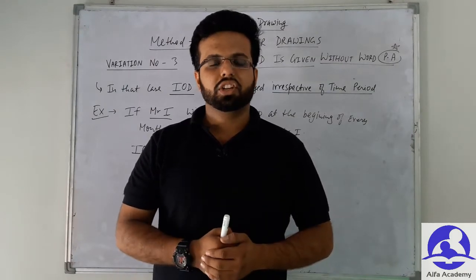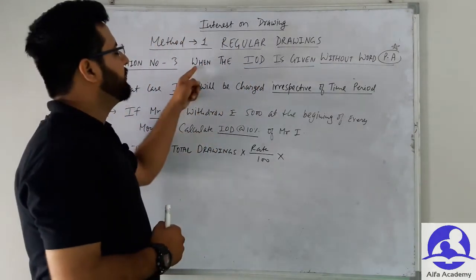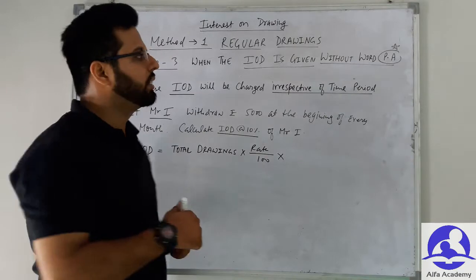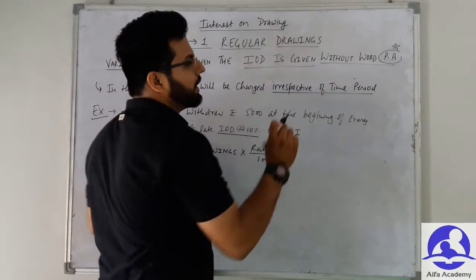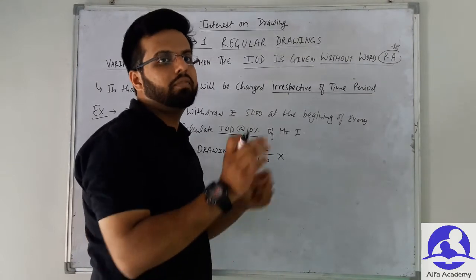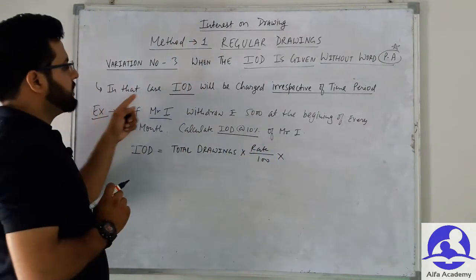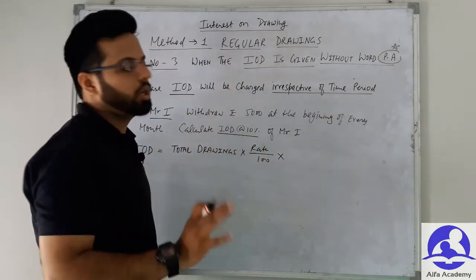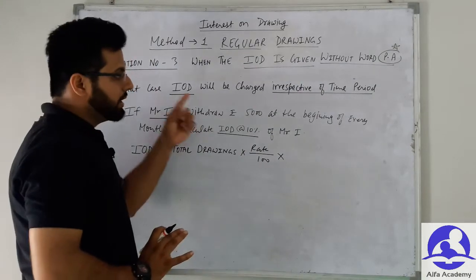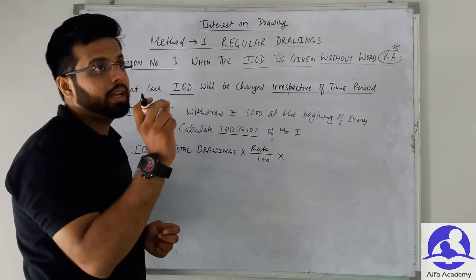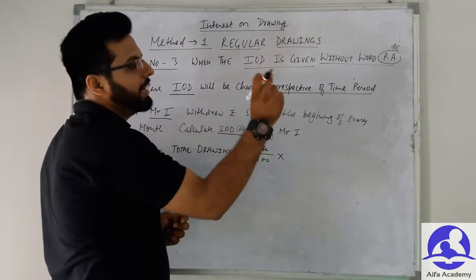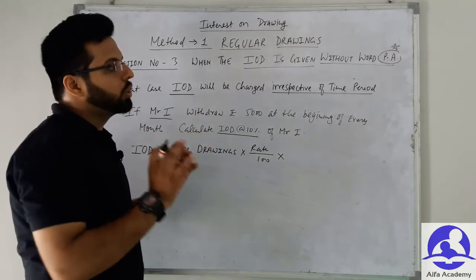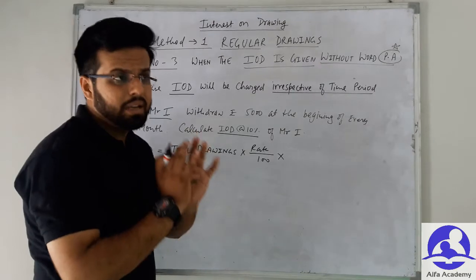Now let's talk about Variation Number 3. In Variation 3, the interest on drawing rate is given without the word 'per annum.' When the question gives the interest rate without the word 'per annum,' interest on drawing is charged irrespective of the time period — meaning you do not need to calculate average months/12 or months/12. This is also a very important concept. If 'per annum' is mentioned, follow the previous method; if not, time period is ignored.